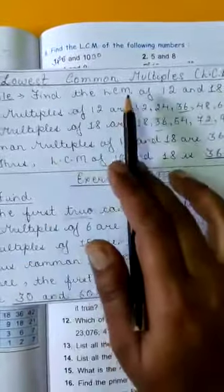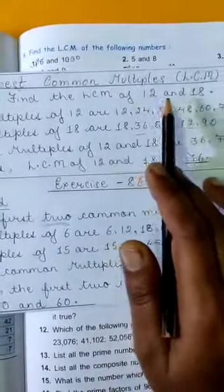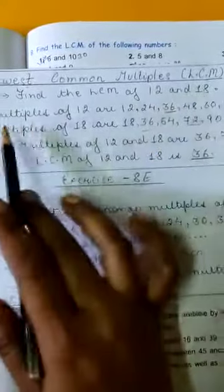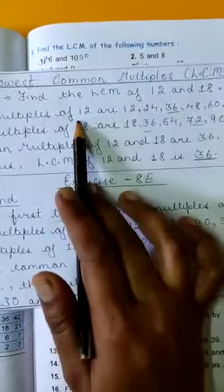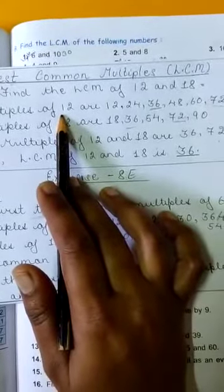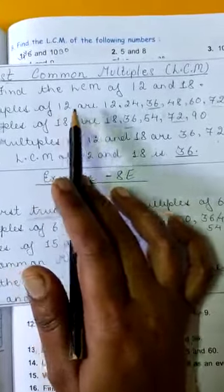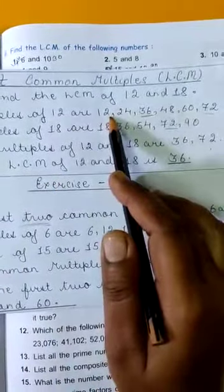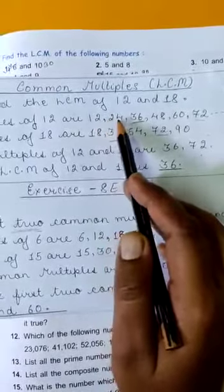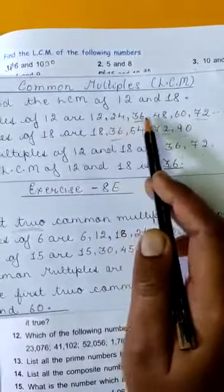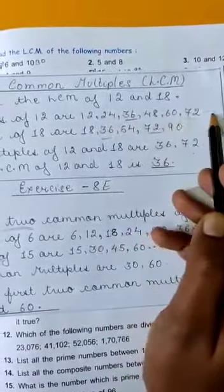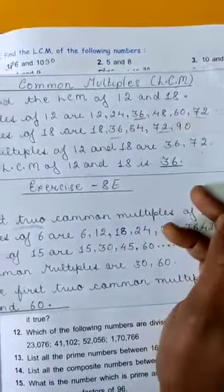Suppose you have to find the LCM of 12 and 18. First you will write multiples of 12. Multiples of 12 means you have to write the multiplication table of 12, like 12, 24, 36, 48, 60, 72 in this manner.